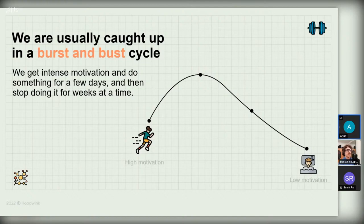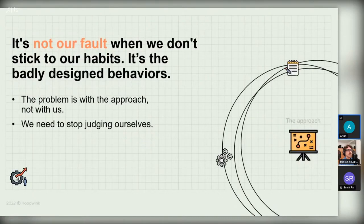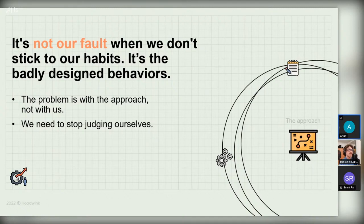We are usually caught up in what he calls a 'burst and bust cycle' — that's our standard approach to behavior change. We get intense motivation, do something for a few days, then stop doing it for weeks at a time. One of the things he says is that it's not our fault when we don't stick to our habits. The fault lies with badly designed behaviors. We've been taught the wrong way to approach behavior change — taught to blame ourselves and feel guilty — but it's the approach that is wrong. We need to stop judging ourselves and look at our systems of behavior change instead.